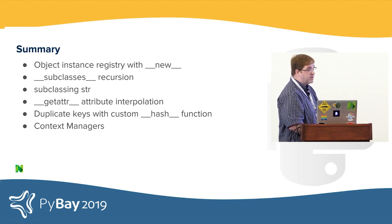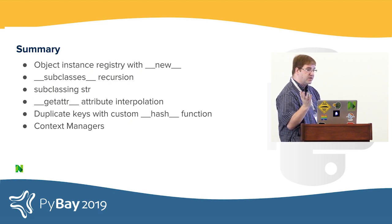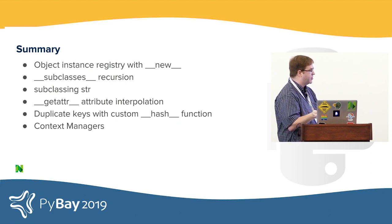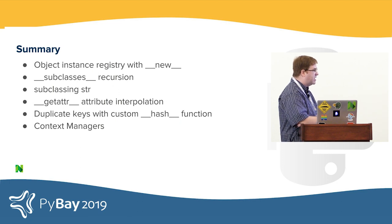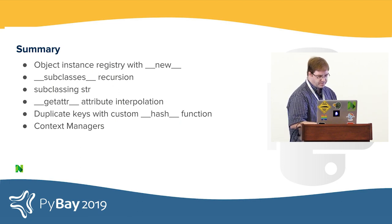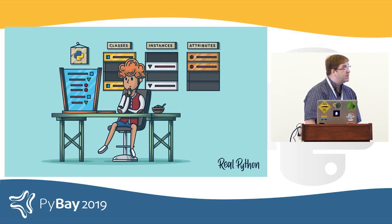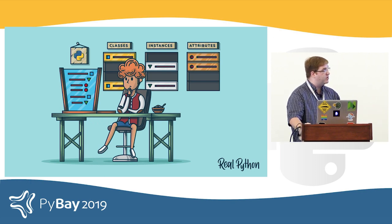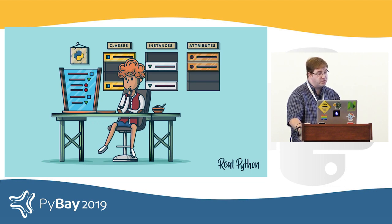Here's a quick summary of some of the interesting Python things we went over: tracking all instances created of a particular class, using __subclasses__ to recurse through them, subclassing str, custom __getattr__, custom __hash__ functions, and context managers. I hope this has shown some of the great and flexible options Python gives for its class model and object model, and inspires you in ways you can use it for your own tools.